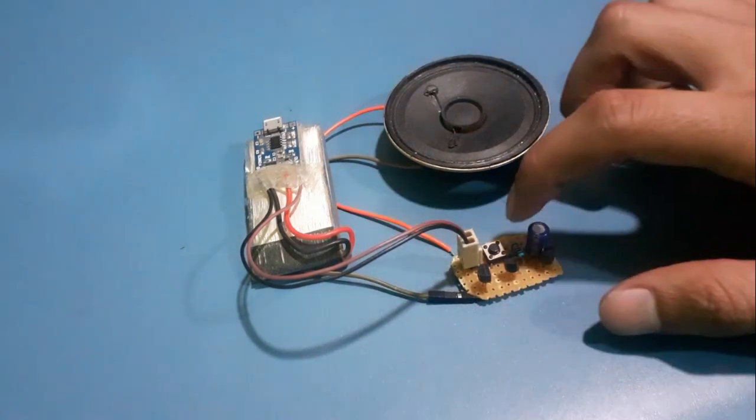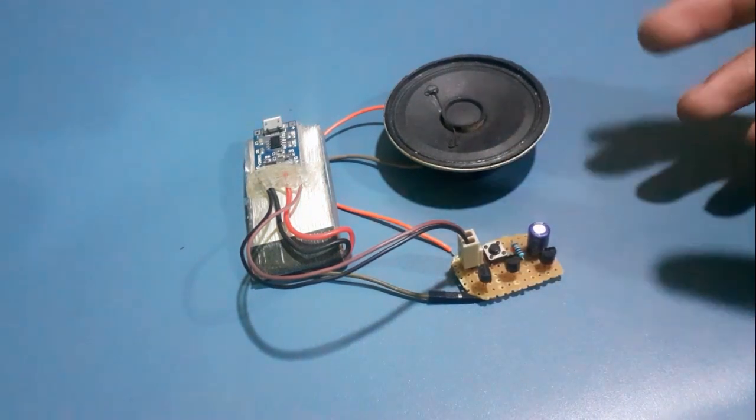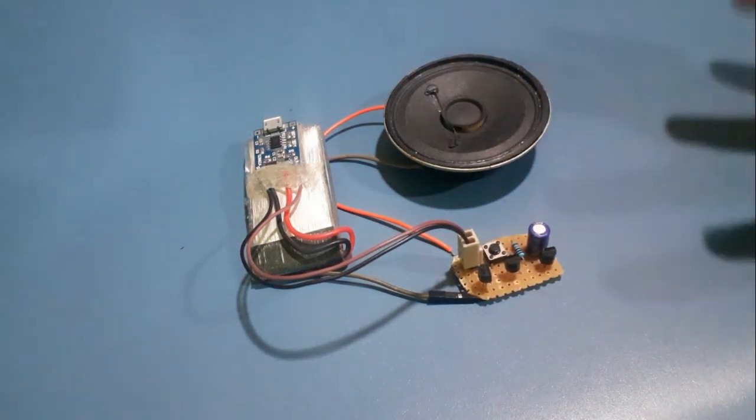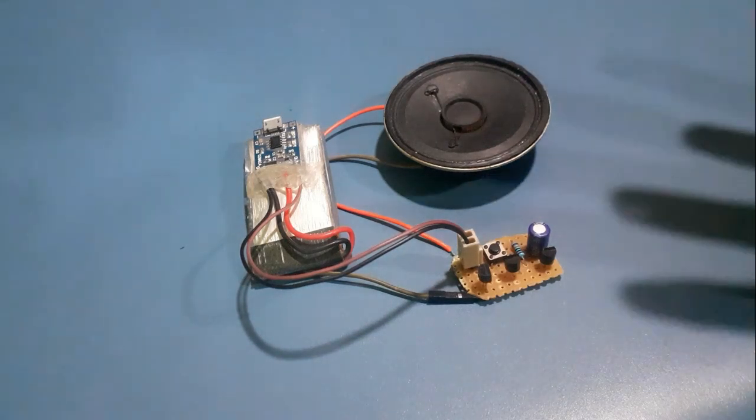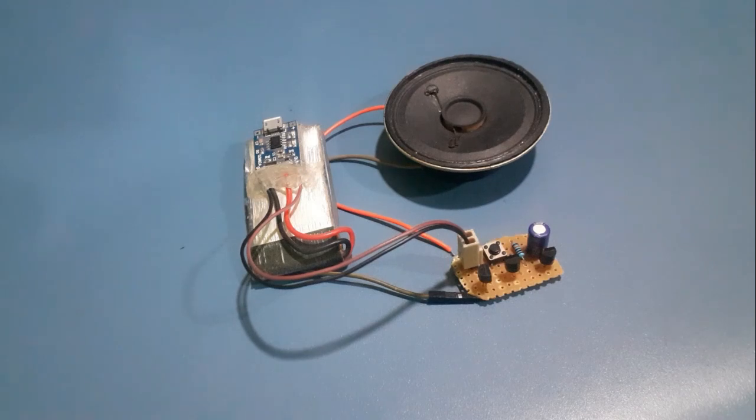Instead of using a 100kΩ resistor, you can use a 100kΩ potentiometer so that you can vary the time of the tone. This is how you can build a musical doorbell using UM660 Melodies Generator IC.